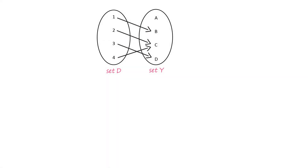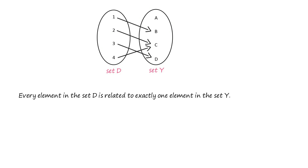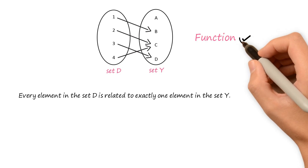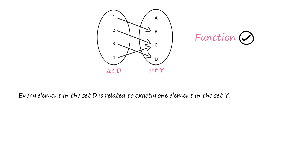Now consider the sets D and Y related to each other as shown. Can we consider this relation as a function? Pause this video and give it a thought. Again, every element in the set D is related to exactly one element in the set Y, so the given relation is a function. The range consists of the elements b, c, and d. So in this case, the range is a strict subset of the codomain.